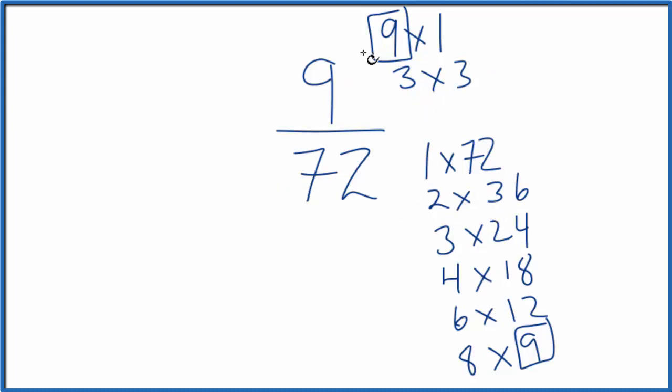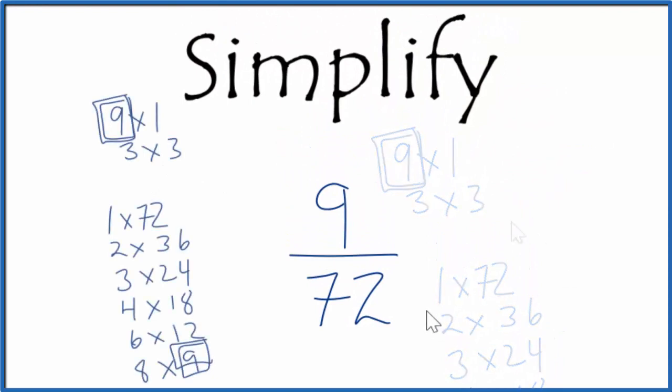So I'm going to divide the numerator and the denominator by 9. So let me move this over here. And when I divide 9 by 9, I get 1. When I divide 72 by 9, I get 8.